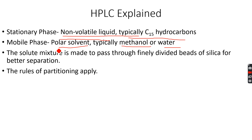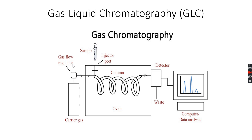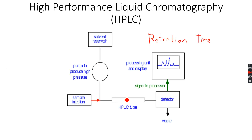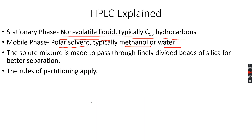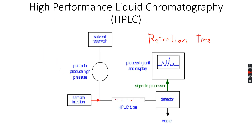The mobile phase is typically methanol and water, which are very polar due to the oxygen atom they contain. The solute mixture is made to pass through finely divided beads of silica inside the HPLC tube, which allows for better separation as the mixture passes through.